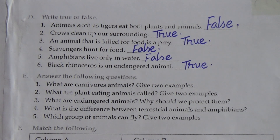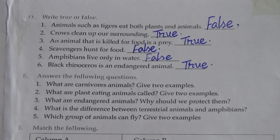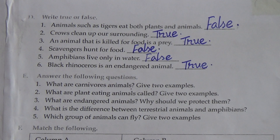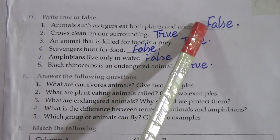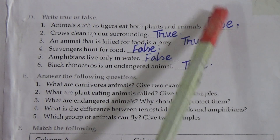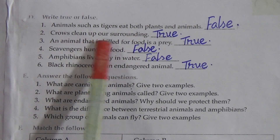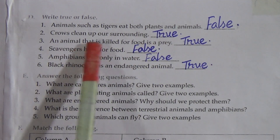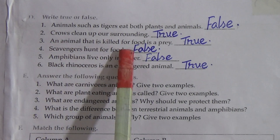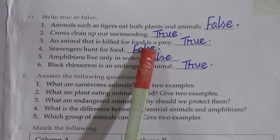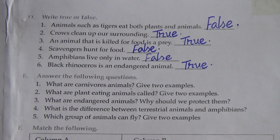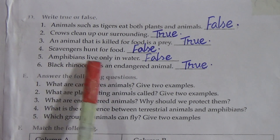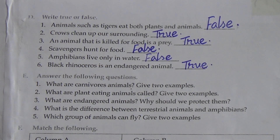Exercise number D: write true or false. Number one — animals such as tigers eat both plants and animals: False, because tigers only eat flesh or meat. Number two — crows clean up our surroundings: True. Number three — an animal that is killed for food is a prey: True. Number four — scavengers hunt for food: False, scavengers do not hunt for their food. Number five — amphibians live only in water: False, amphibians live both on land and in water. Number six — black rhinoceros is an endangered animal: True.